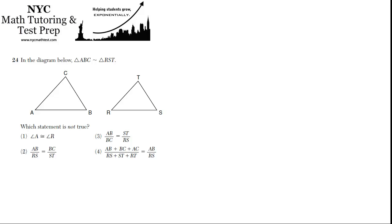So we're going to use that to find out which statement is not true. Let's go down the list. First, angle A is congruent to angle R. That is true because they're similar triangles, so their corresponding angles are congruent. That one is true, and we'll look for the one that's not true.